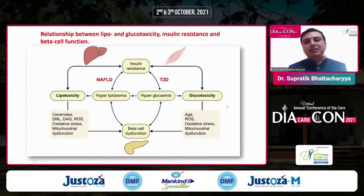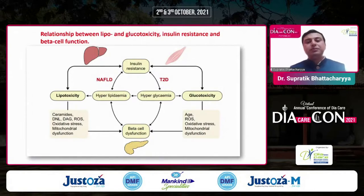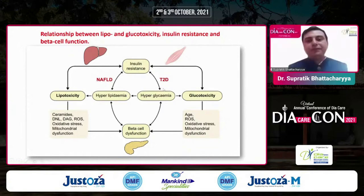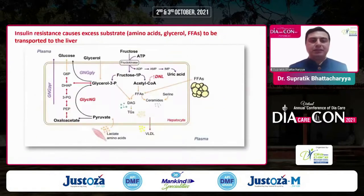Insulin resistance causes NAFLD, hyperlipidemia, lipotoxicity, and a lot of oxidative stress, which leads on to beta cell dysfunction. Similarly, on the other end of the spectrum, if you have hypoglycemia in type 2 diabetes, there is glucotoxicity and a lot of oxidative stress leading to beta cell dysfunction.